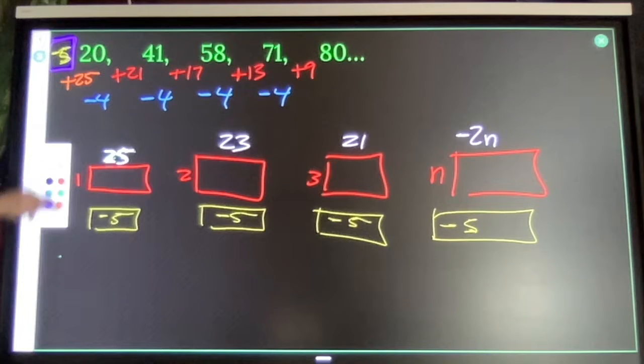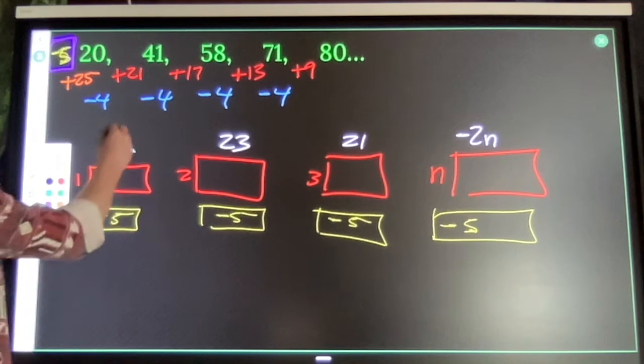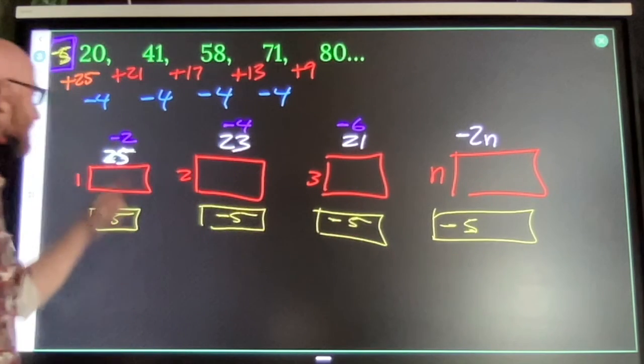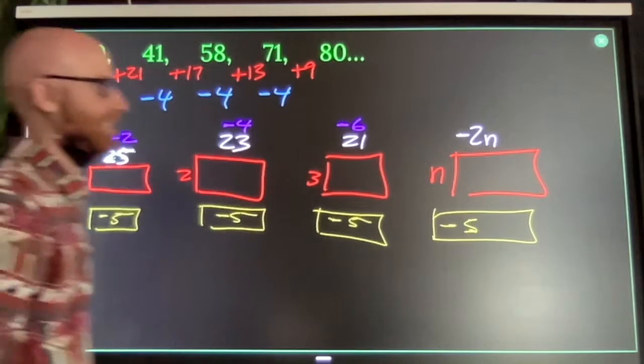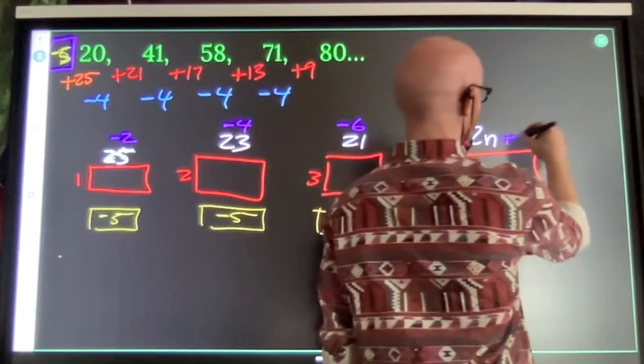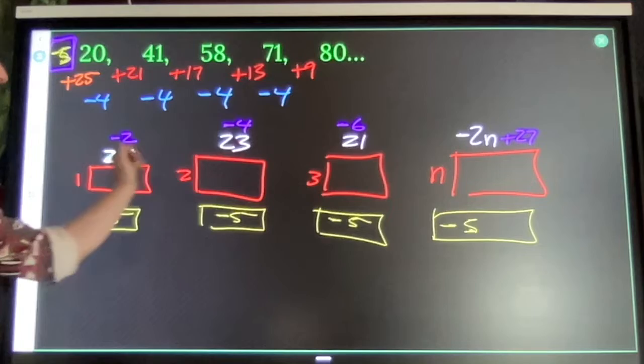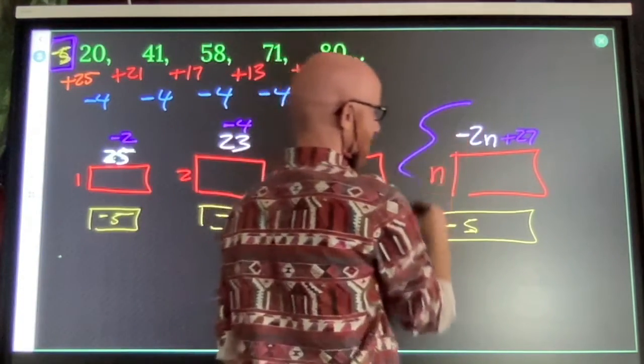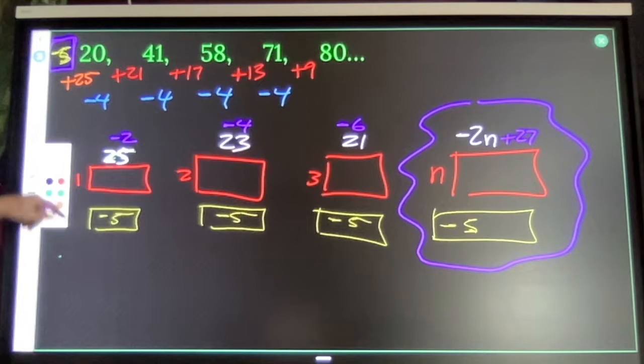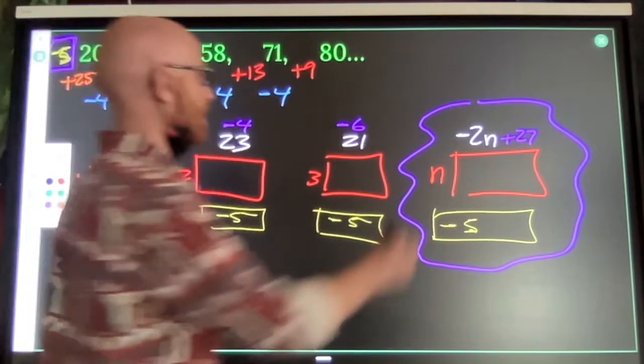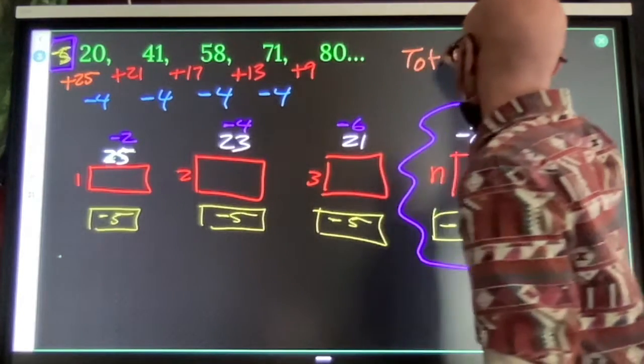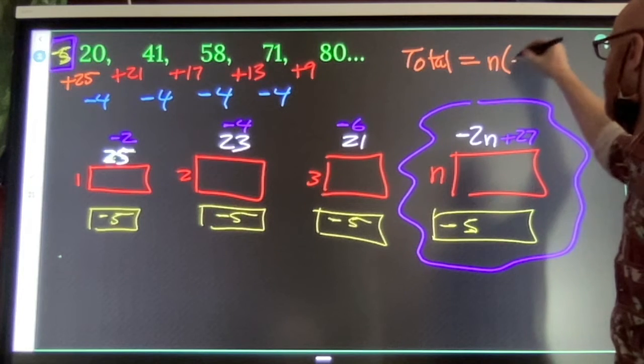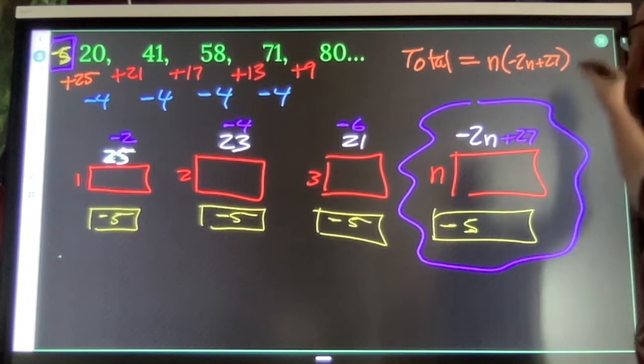If I write my negative 2 cycle, that's negative 2, negative 4, negative 6. I need to add 27 for this to actually build my pattern. 27 minus 2 is 25. 27 minus 4 is 23. That's my building blocks for my general equation. The total in this sequence is n by negative 2n plus 27 minus 5.